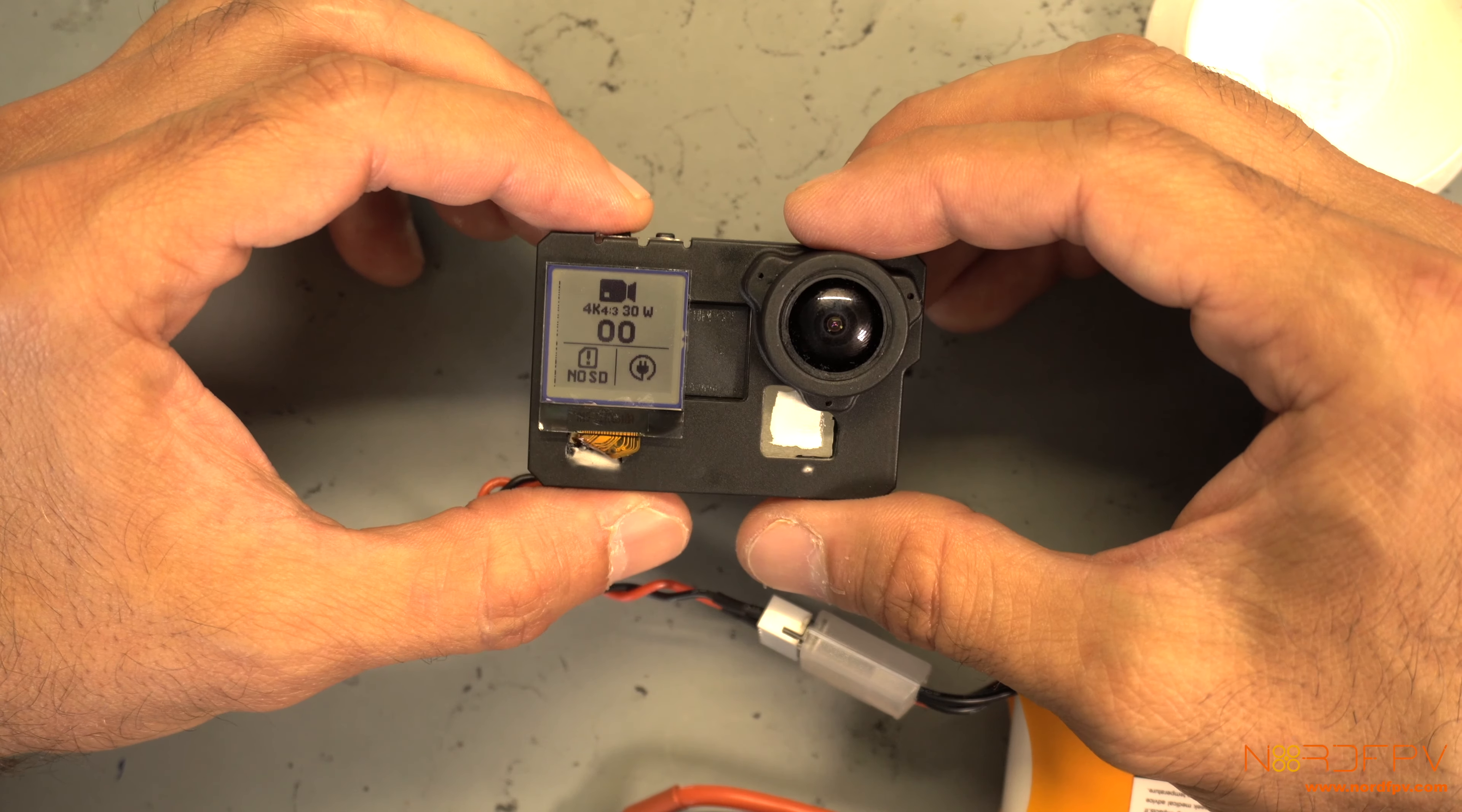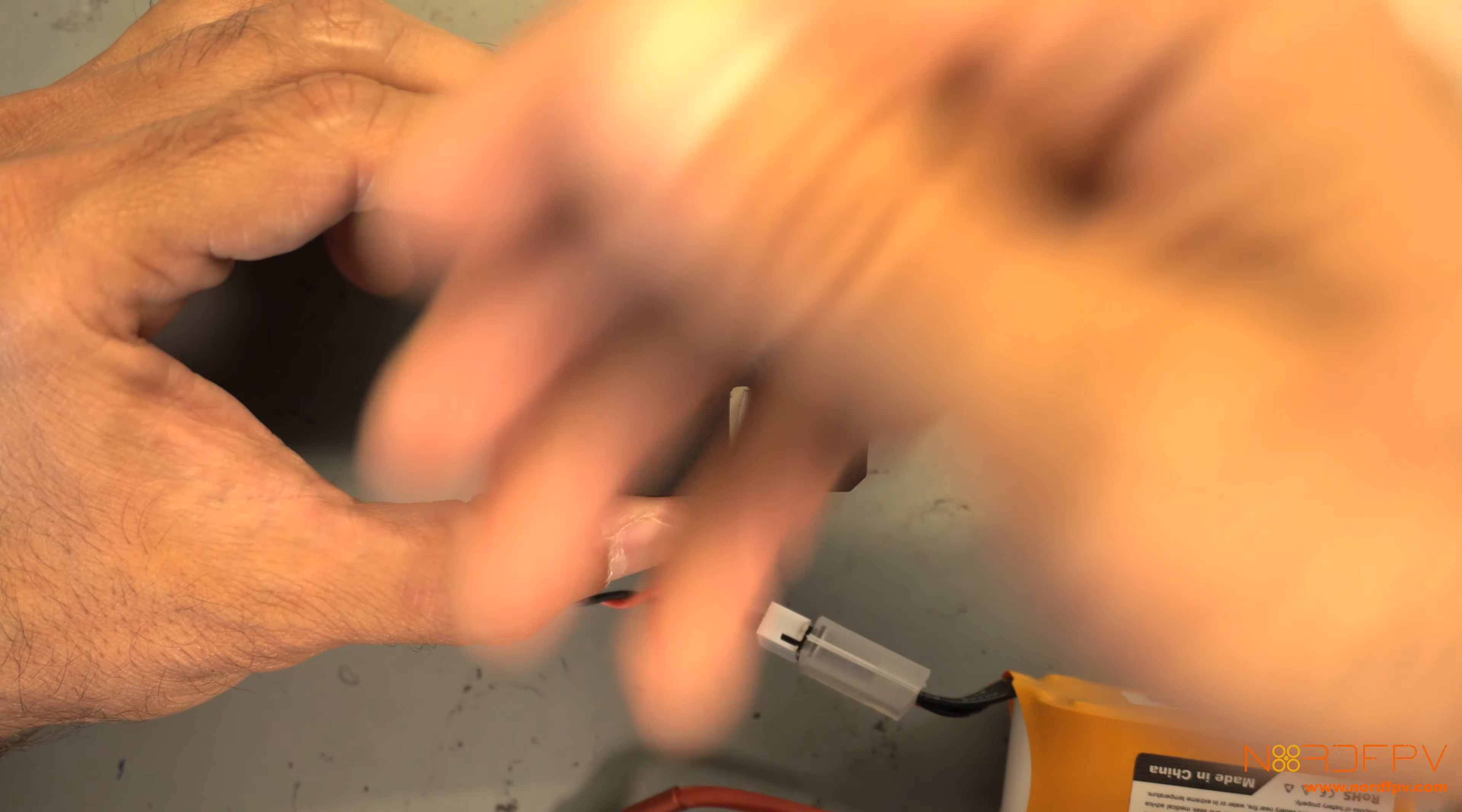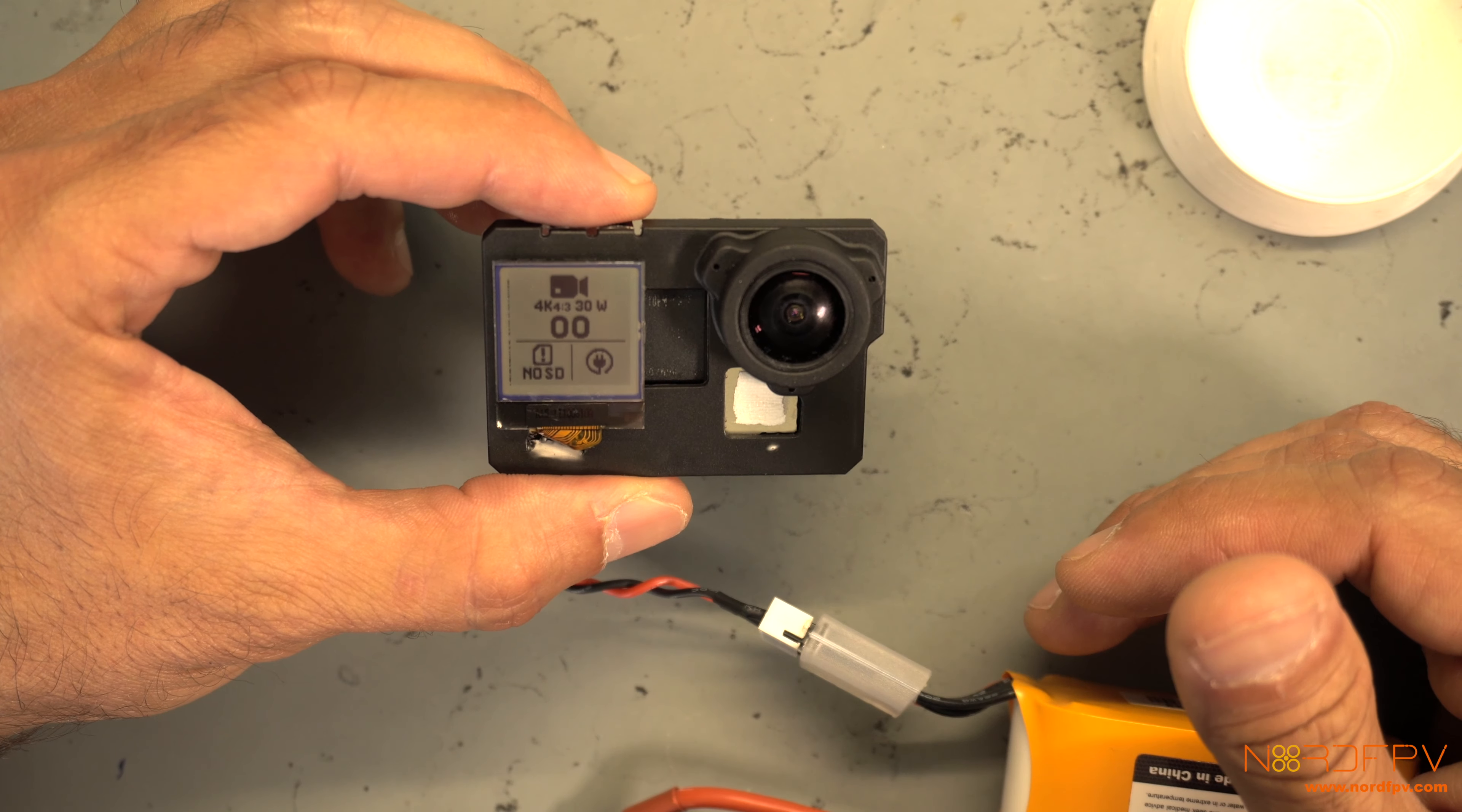So hopefully you saw how the process is. It's not complicated as long as you warm up very well that area and carefully come with something that is thin and sharp. You should be able to cut the glue and then remove the screen without any problem. Thank you for watching and hope to see you soon. Bye!